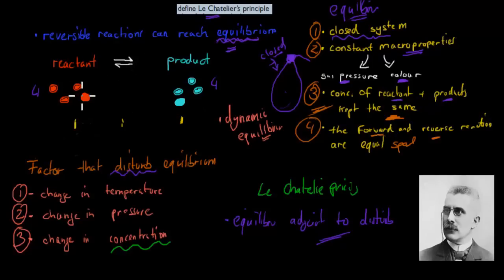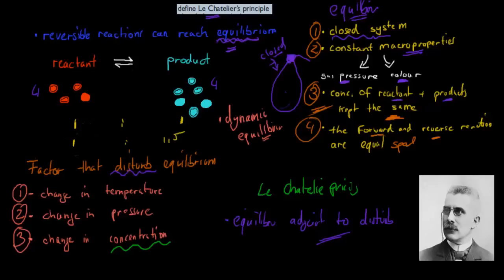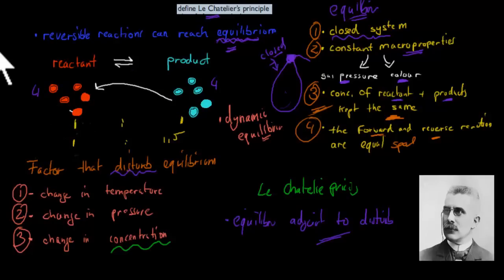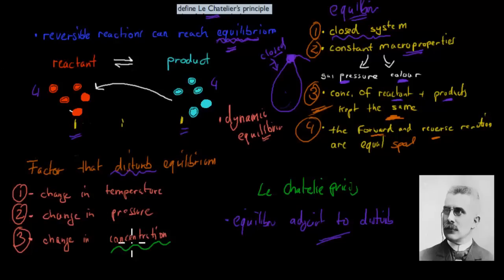What happens if we add more concentration? At the moment it's one-to-one. Let's say we add two more products. Now it's no longer one-to-one — for every one reactant we now have 1.5 products. The equilibrium doesn't want this; it wants to return to the one-to-one ratio. So one of the extra products will go over to the other side, becoming a reactant. Once that happens, you have five reactants and five products — a one-to-one ratio again. This is what happens when we change concentrations: the reactions adjust to ensure the ratio stays the same.